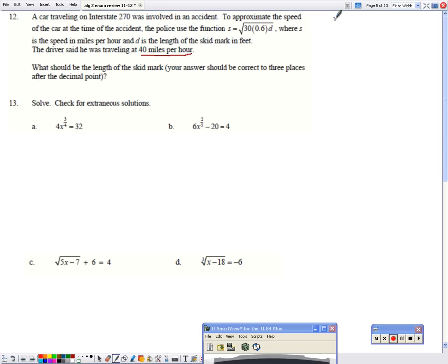So 40 miles an hour is the speed. So we are going to put that in for S. And we're going to say 40 equals the square root of 30 times 0.6D. Well, the first thing I'm going to do is I'm going to get rid of the square root by squaring both sides. And 40 squared is 1600. Now I've got this 30, and then parentheses 0.6, and then D. Well, 30 times 0.6 is just 18. I'm going to put this on my calculator. So I have 1600 equals 18D. I'm going to divide both sides by 18. And I get D equals 88.889 feet.